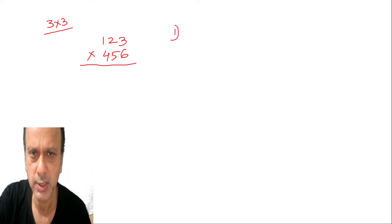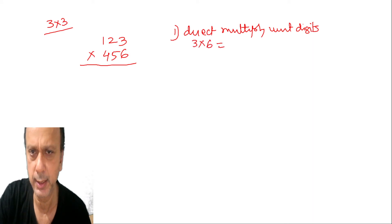First step is direct multiply unit digits. Step by step you can note down accordingly. So it will be 3 into 6, which is 18. From that, 8 goes in the answer slot and 1 is carried forward. So you carry 1. Next step is cross multiply unit and ten digits.